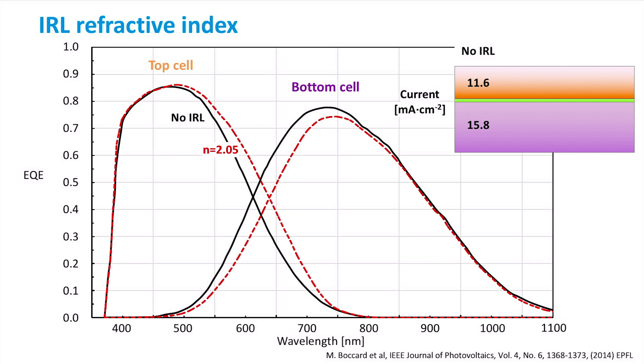We can see that the EQE of the top cell is increased for wavelengths greater than 500 nm, as shorter wavelengths are already absorbed in the first pass through the top cell. In the same wavelength range, the EQE of the bottom cell decreases. As a result, the current generated by the top cell is increased by 1.2 mA per square centimeter, while the bottom cell current is decreased by 1.5 mA per square centimeter.